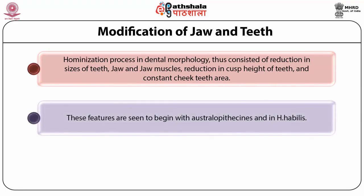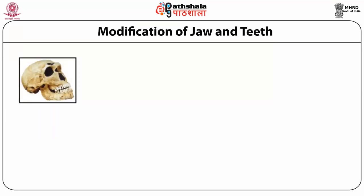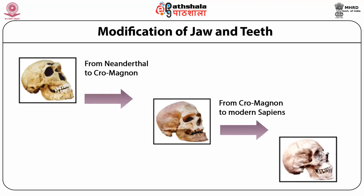The humanization process in dental morphology thus consisted of first a reduction in size of the teeth, then changes in the jaw and jaw muscles, reduction in cusp height of the teeth, and constant cheek teeth area — features seen to begin within Australopithecus and Homo habilis. The next figure explains the humanization process especially in the skull, lower jaw, upper jaw, and dentition, showing changes from Neanderthal man to Cro-Magnon man and from Cro-Magnon man to modern Homo sapiens, with marked evolutionary changes in the skull and dentition.